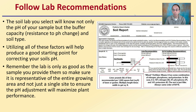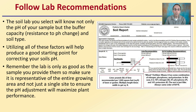We want to follow the lab recommendations. On a soil report, the lab will often offer recommendations for the amount of limestone or sulfur to add. The soil lab you select will know not only the pH of your sample, but also — if they're offering recommendations — they will calculate the buffer capacity, which is simply resistance to pH change in relation to your soil type. Utilizing all these factors will help produce a good starting point for correcting your soil's pH if it does need to be corrected.